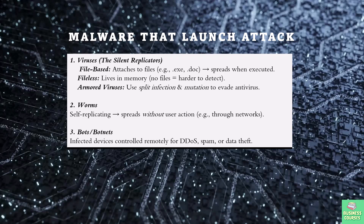The second type is worms. Worms are viruses on steroids — they do not need you to click anything. They slither through networks automatically. The WannaCry worm exploited a Windows flaw to hold hospitals hostage in 2017. The third type is bots. Bots turn your device into a hacker's puppet. Thousands of infected bots form a botnet, used to crash websites via DDoS attacks or send phishing emails from your PC without you knowing.